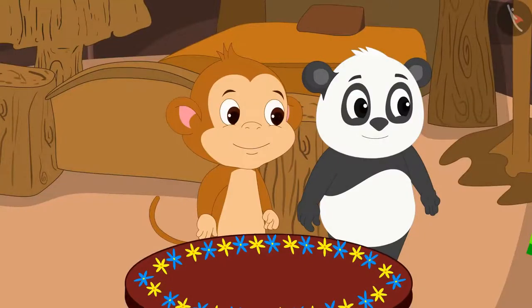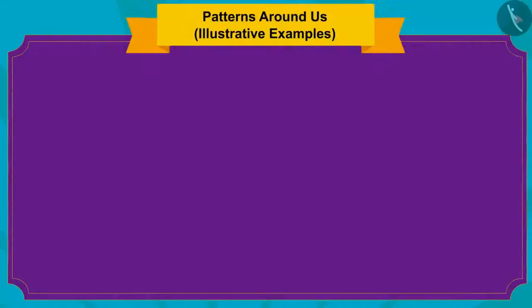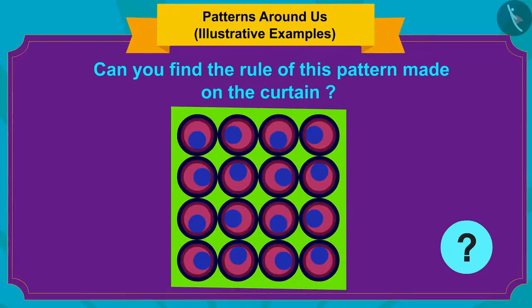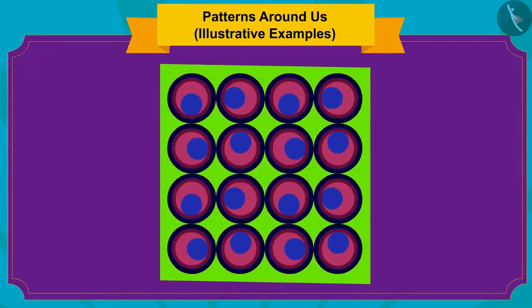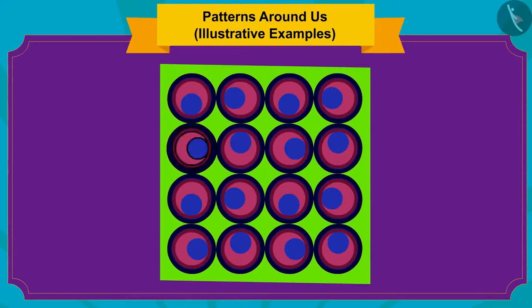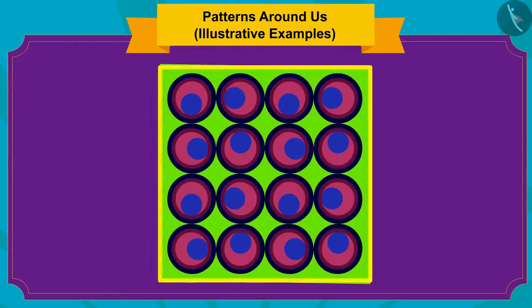Golu and Babban also saw a unique pattern on the curtain of Golu's house. Can you find the rule of this pattern made on the curtain? If you want, you can stop the video and find the answer. Well done, kids. Your answer is absolutely correct. Here, a group has been formed by rotating one shape in different ways, and then by repeating this group of shapes again and again, a unique, beautiful pattern has been made.